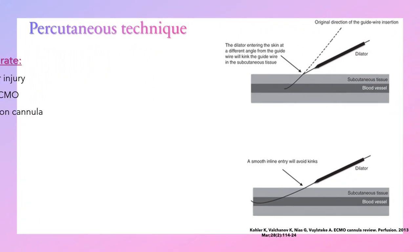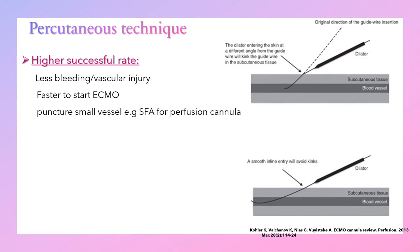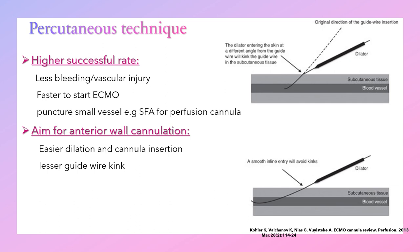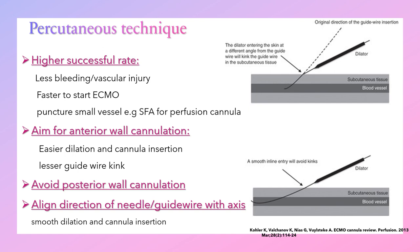The percutaneous technique has a higher success rate with less bleeding, less vascular injury, and allows faster ECMO initiation. The aim is anterior wall cannulation, which is easier to dilate and allows smoother cannula insertion with less guide wire kinking. Avoid posterior wall cannulation. Align the direction of the needle and guide wire with the axis of the vessel for smooth dilatation and cannula insertion. As shown in this diagram, wire kinking occurs when the dilator and guide wire are not in the same direction; smooth in-line entry avoids kinking.